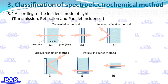Another classification divides methods into transmission method, reflection method, and parallel incidence method according to the light incident method. The transmission method passes the incident light beam vertically through the light-transmitting electrode and its adjacent solution. The reflection method includes the internal reflection method and the specular reflection method. In the internal reflection method, incident light passes through the back of the light-transmitting electrode and penetrates the electrode-solution interface, with the incident angle just larger than the critical angle so that light is totally reflected. The specular reflection method lets light enter from the solution side, reach the electrode surface, and be reflected. In the parallel incidence method, a light beam is emitted between the electrode and the solution near the electrode surface.